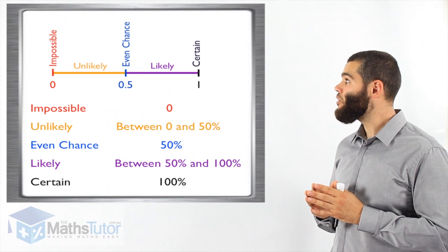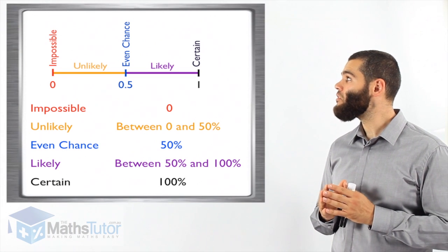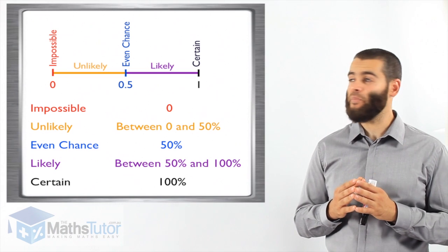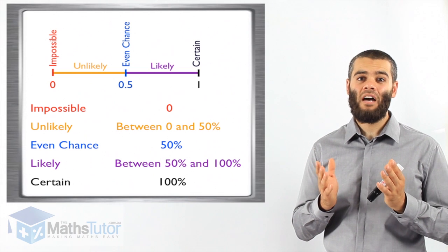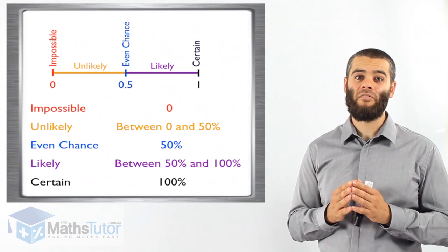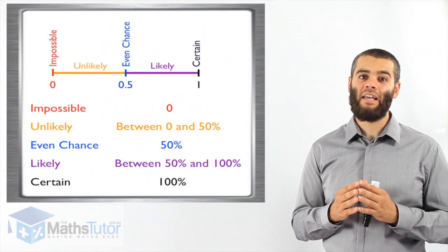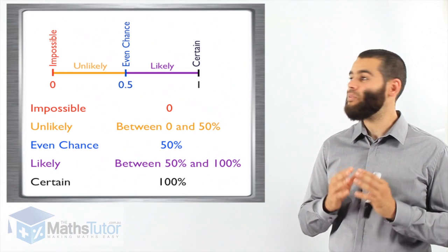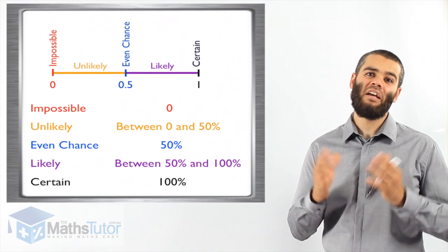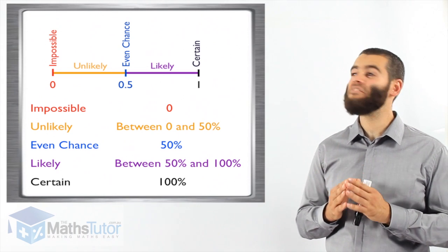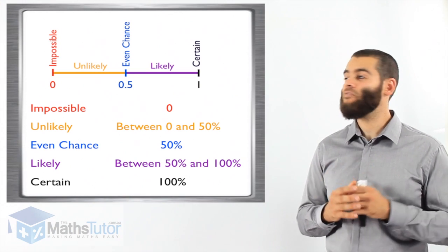Then we have from zero to fifty percent, zero to zero point five which is the same as fifty percent, is unlikely. Meaning it is less than half. It is a small chance of happening. Meaning it is unlikely. It is an unlikely event that it will happen. So the term that we use is unlikely. That event most likely will not happen because it is less than half. Less than fifty percent. Between zero and fifty percent.